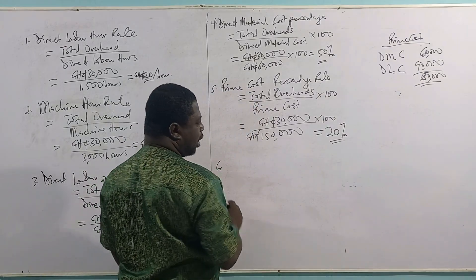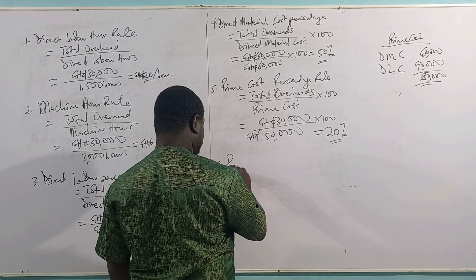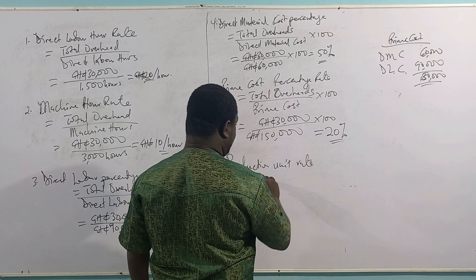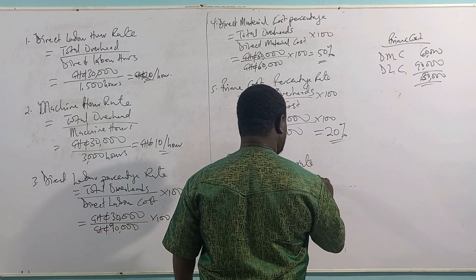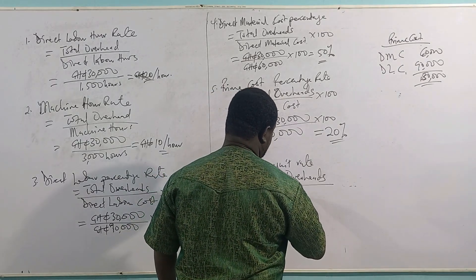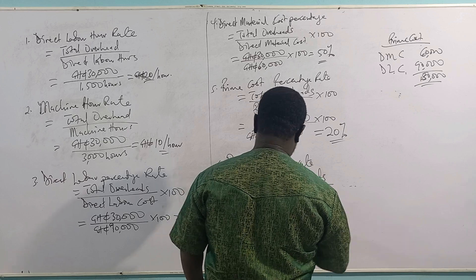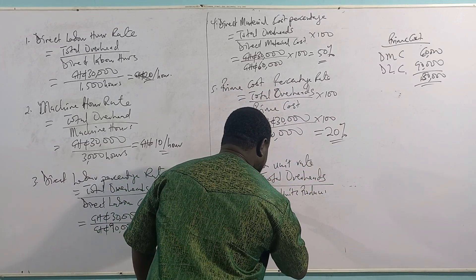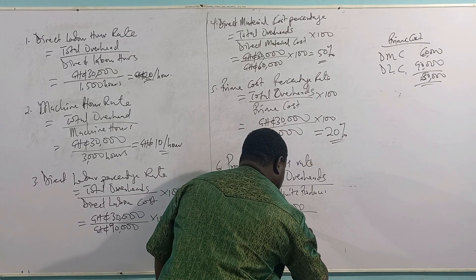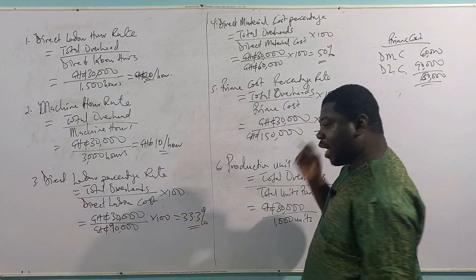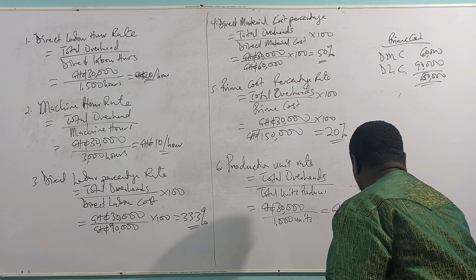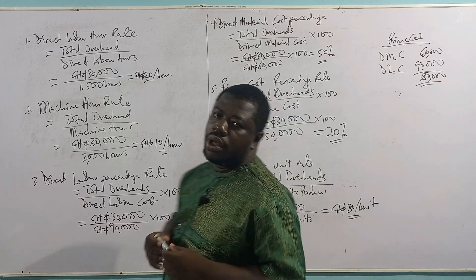Finally, we look at the production units rate. The formula is: total overheads ÷ total units produced. From the question, total overheads are 30,000 and units produced are 1,000 units. Therefore the rate is 30 cedis per unit.